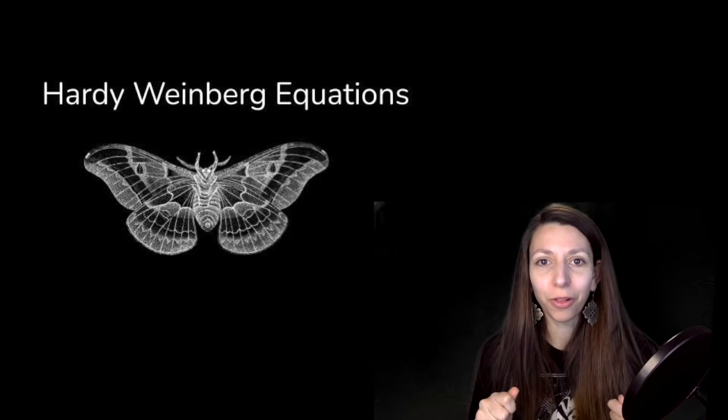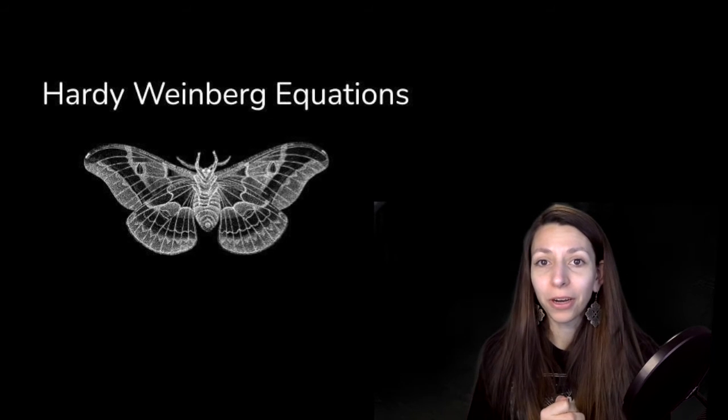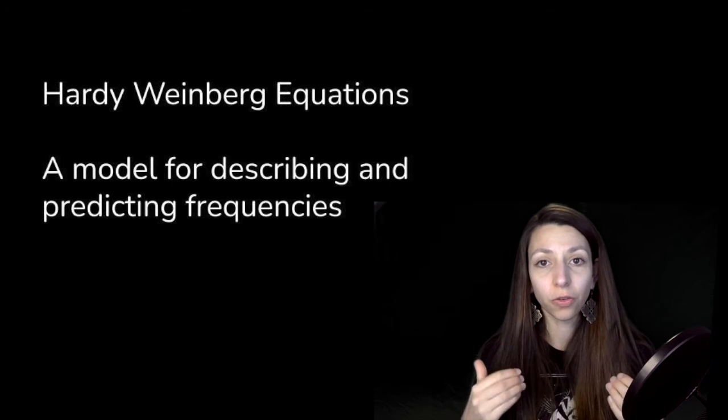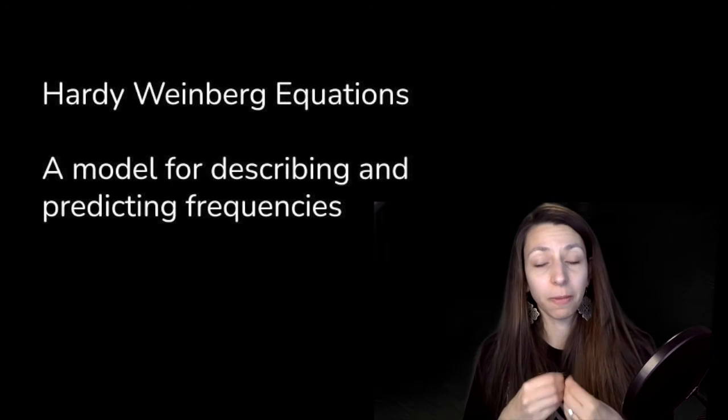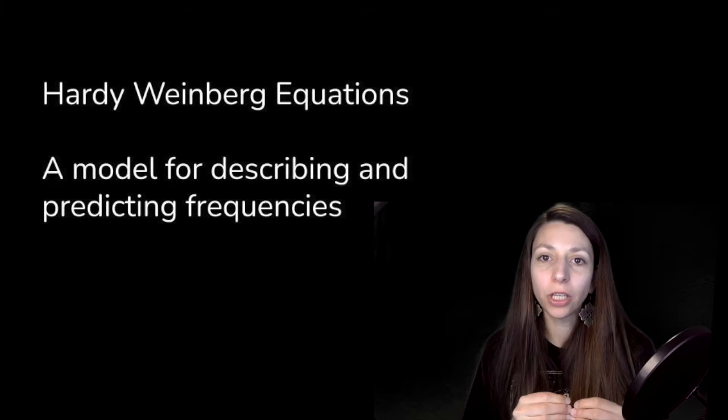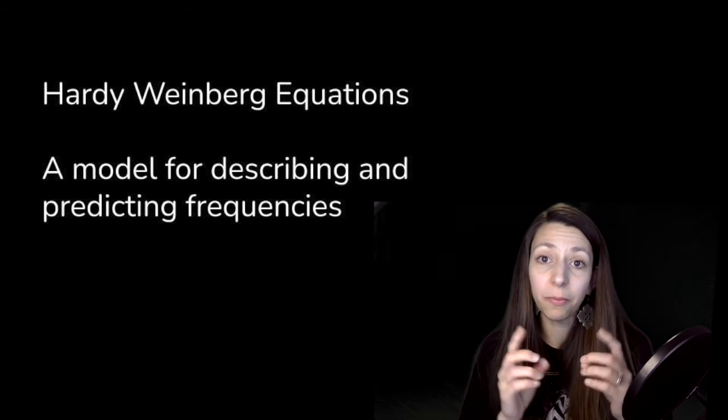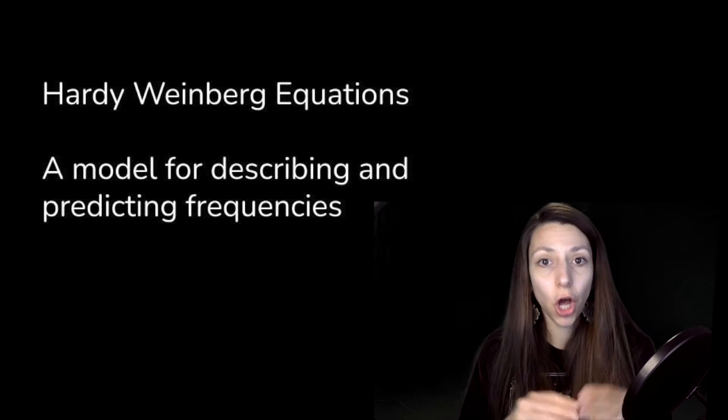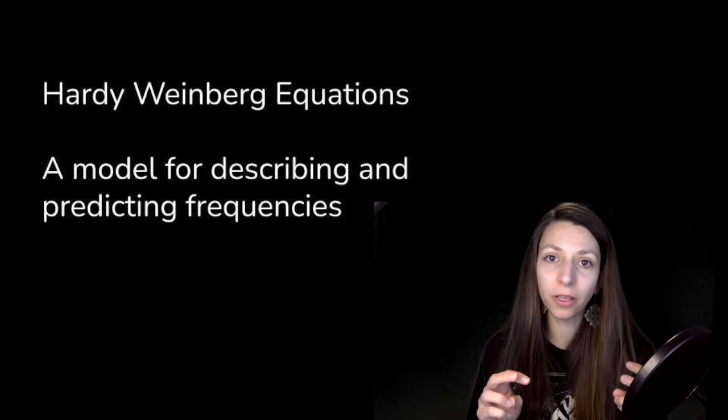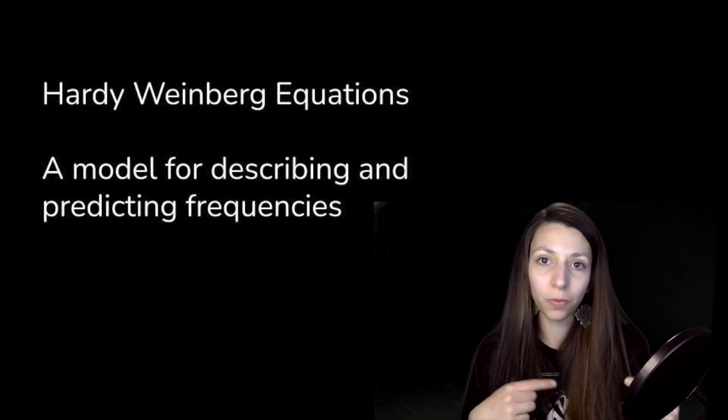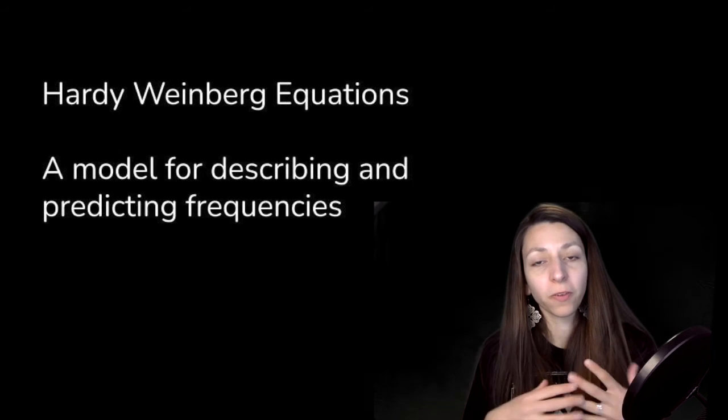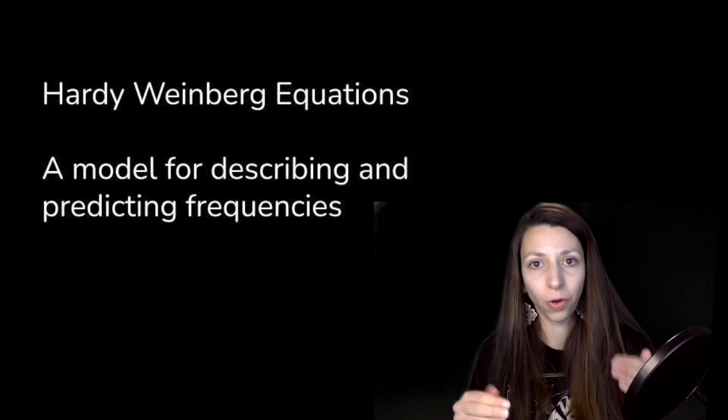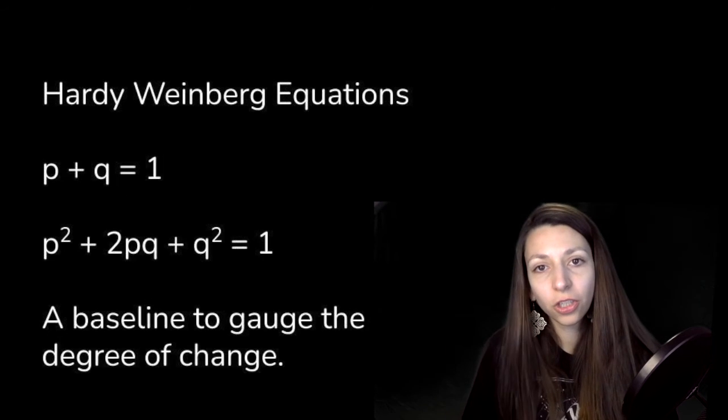What is the Hardy-Weinberg equilibrium? Hardy-Weinberg is an equation we can use to determine the frequency of alleles in a population at a given time. Hardy-Weinberg is used as a model for describing and predicting allelic frequencies in non-evolving populations. It represents ideal populations that aren't changing, and since natural populations do change, Hardy-Weinberg provides us with a baseline to gauge that degree of change.